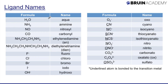Like VSEPR theory, there's a lot of memorization for coordination chemistry. The best way to handle this is flashcards. On the left-hand side you see the formula; on the right, the name. You won't be given this on an exam. Notice that some ligands are neutral, the halogens have a minus one charge, and many polyatomic ions carry negative charges of either minus one or minus two.